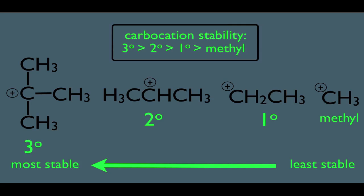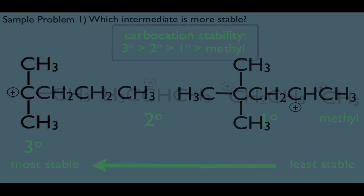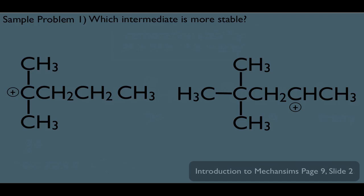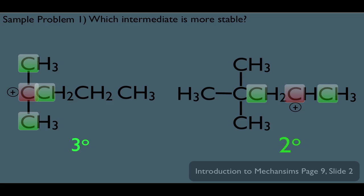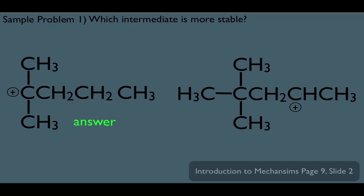Now let's learn how to use this trend. In this sample problem, focus on the positively charged carbon and count how many carbons are directly bonded. The first intermediate on the left has three carbons bonded, making it tertiary. The intermediate on the right has two carbons bonded, making it secondary. Therefore, the intermediate on the left is the more stable carbocation.